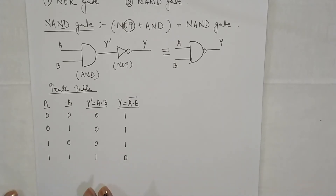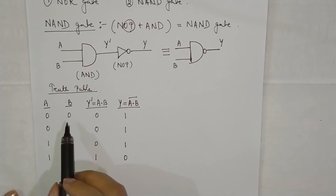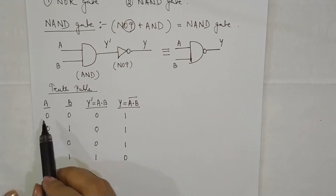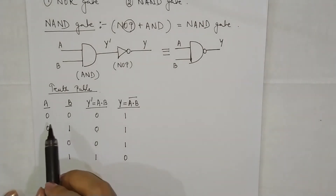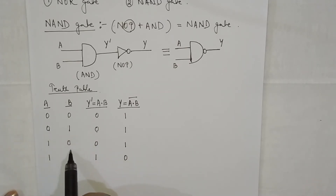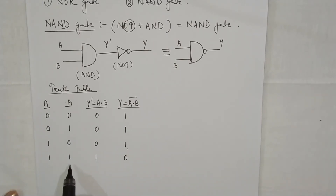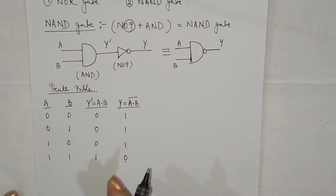The important factor here is that whenever any of the inputs is low — that is 0 — the output is high. If both the inputs are high, the output is low. This is the NAND gate.